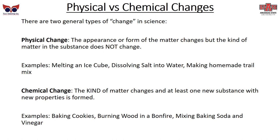To begin with, we want to start with physical versus chemical changes. There are two general types of change. A physical change is where the appearance or form of the matter changes, but the kind of matter in the substance does not change. Consider melting an ice cube — once it's melted, it's still water, just a different form. Or dissolving salt into water: you still have salt and water, and they could be separated again.